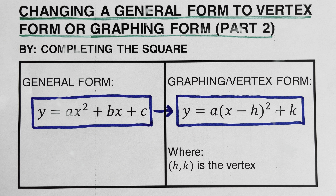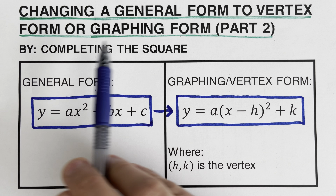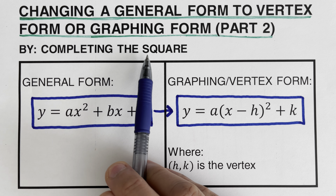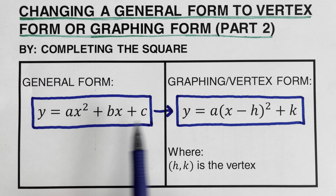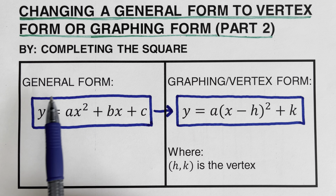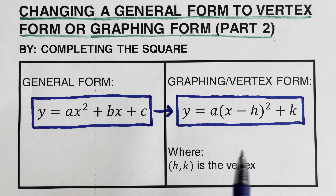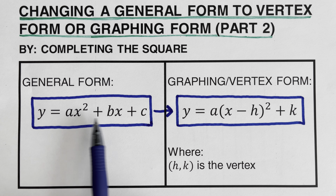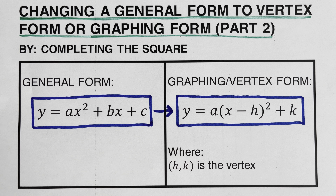Hello everyone. In this video we will be changing a general form of a quadratic equation to its equivalent vertex form or graphing form by completing the square. This is the second part, where the value of a is greater than one. The general form and the graphing form are both shown, and we will convert between them, where h and k represent the vertex.